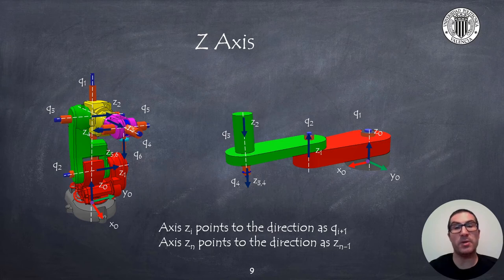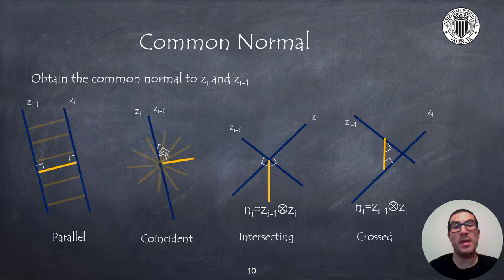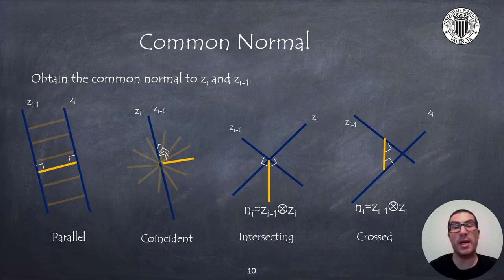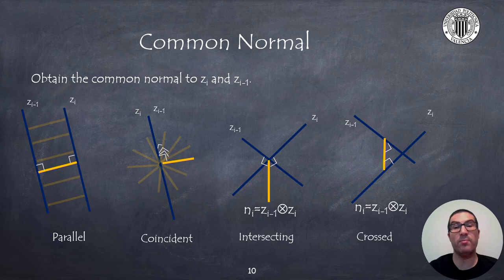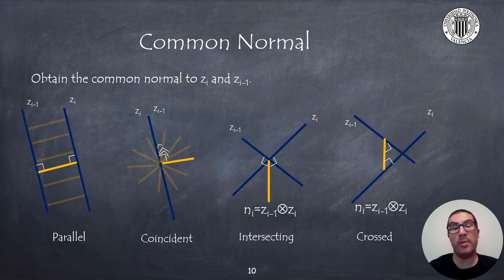The x-axis of the reference frame will point along the common normal between the zi and zi-1 axes. The common normal, by definition, is a direction perpendicular to both axes. There are four possible cases depending on the zi and zi-1 axes. If the joints have parallel axes, there are multiple common normals — we usually choose the one that tries to make certain distance parameters zero. If the z-axes are coincident, again we have multiple common normals, and we choose any that tries to make angles such as zero, π/2, π, or 3π/2 for some Denavit-Hartenberg parameters.